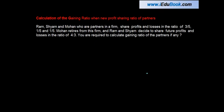Calculation of the gaining ratio when new profit sharing ratio of partners is given. Let's first read the question: Ram, Sham and Mohan are partners in a firm sharing profits and losses in the ratio of 3/5, 1/5 and 1/5.